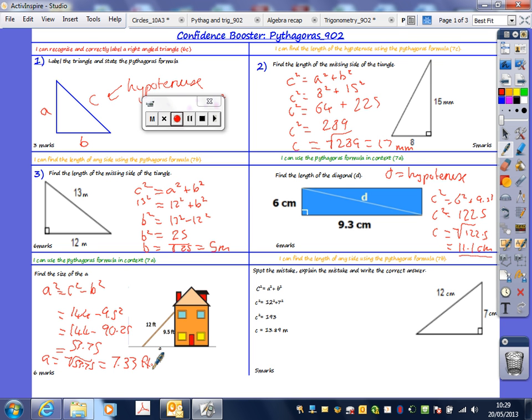Can somebody explain the mistake to me on this one? Somebody's not answered yet. I want them to explain the mistake. You used the wrong formula. It should be A squared equal to C squared minus B squared. And then what's the correct answer? You didn't work out the correct answer, so you don't get your full marks.